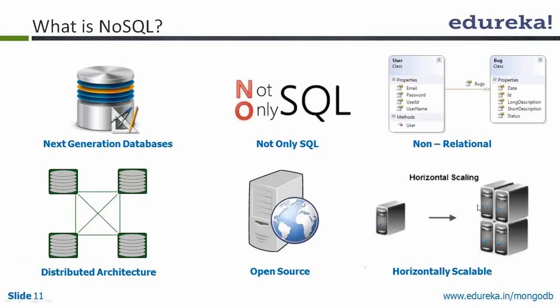With traditional database systems, there was no option for horizontal scaling — or there were significant limitations with those systems. You could scale your servers vertically, but not horizontally. But if you use NoSQL databases, you can scale horizontally.